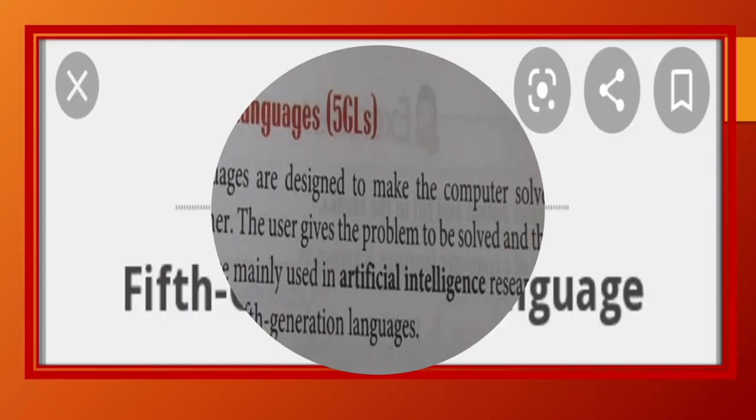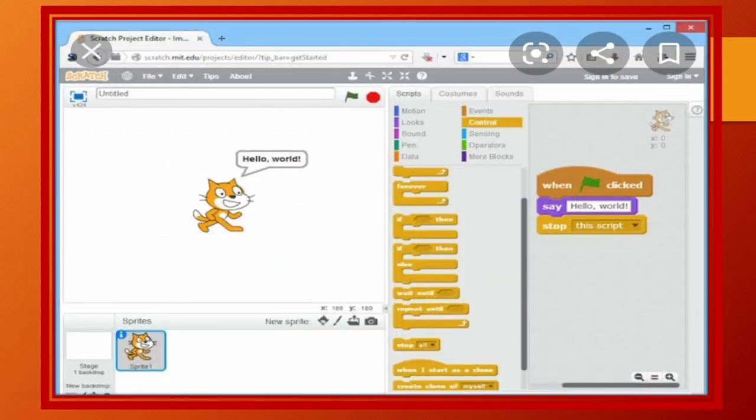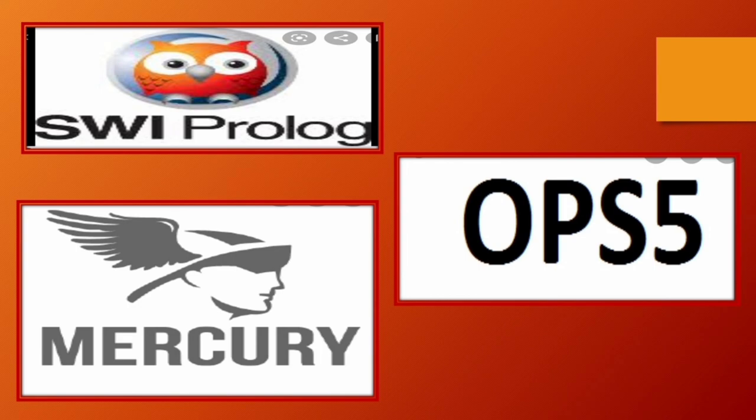Fifth-generation language are designed to make the computer solve a given problem without the programmer. The user gives the problem to be solved and the condition which need to be met. Means kisi bhi tarhan ki problem ko uska solution computer khud nikaal leta hai. Is main kisi programmer ki zururat nahi padti. Fifth generation languages are mainly used in artificial intelligence. Research. Prolog OPS 5 and Mercury are examples of fifth generation languages.